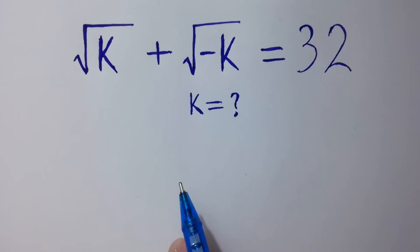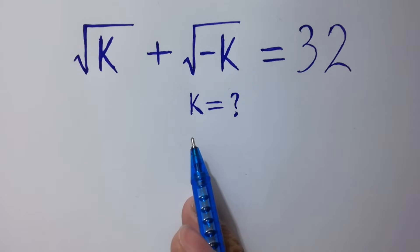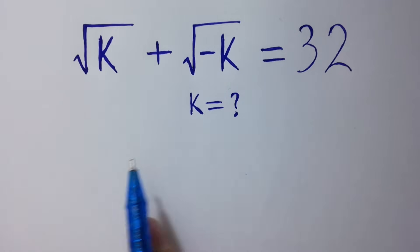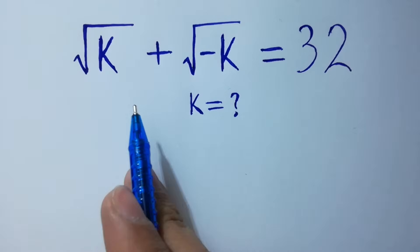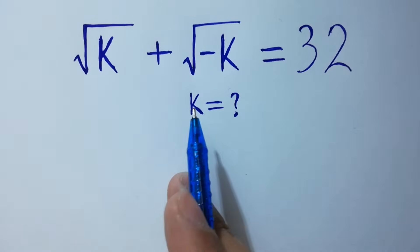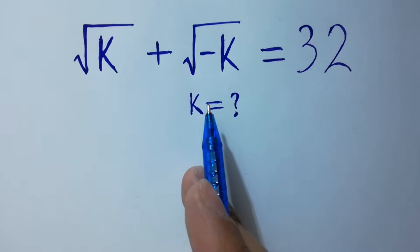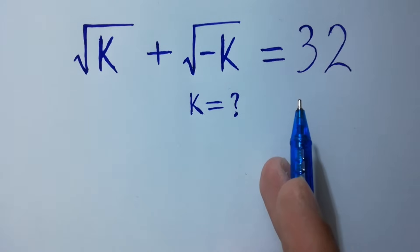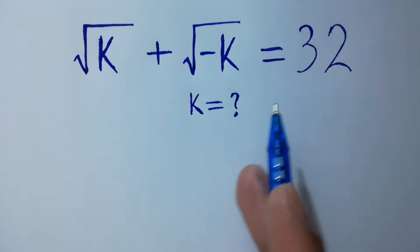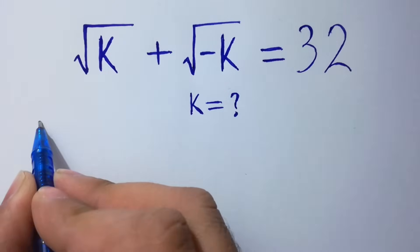Hello friends. Find the value of k if square root of k plus square root of minus k equals 32. Let's have a solution here.